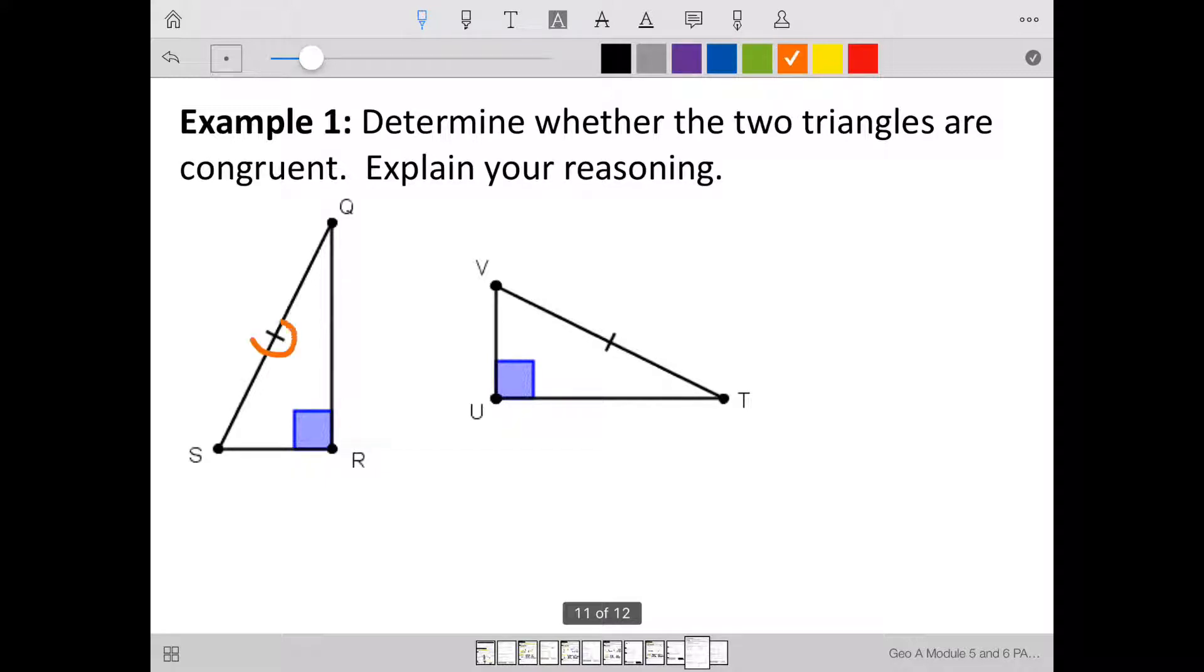This symbol tells me that the hypotenuse matches up, but we have no other congruency markings on these two triangles. While the hypotenuse matches up, we do not have a leg matching up. So we do not have enough information to say that these two triangles are congruent.